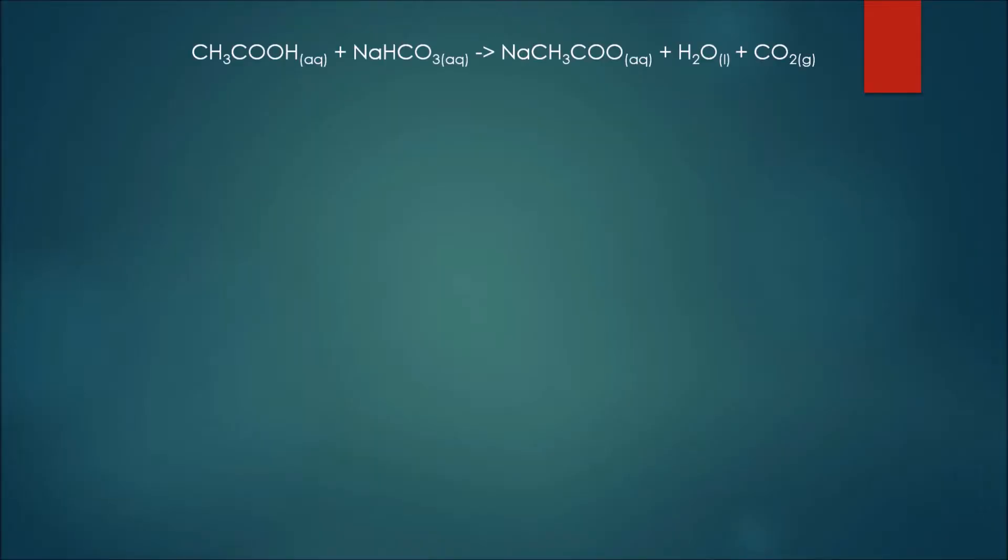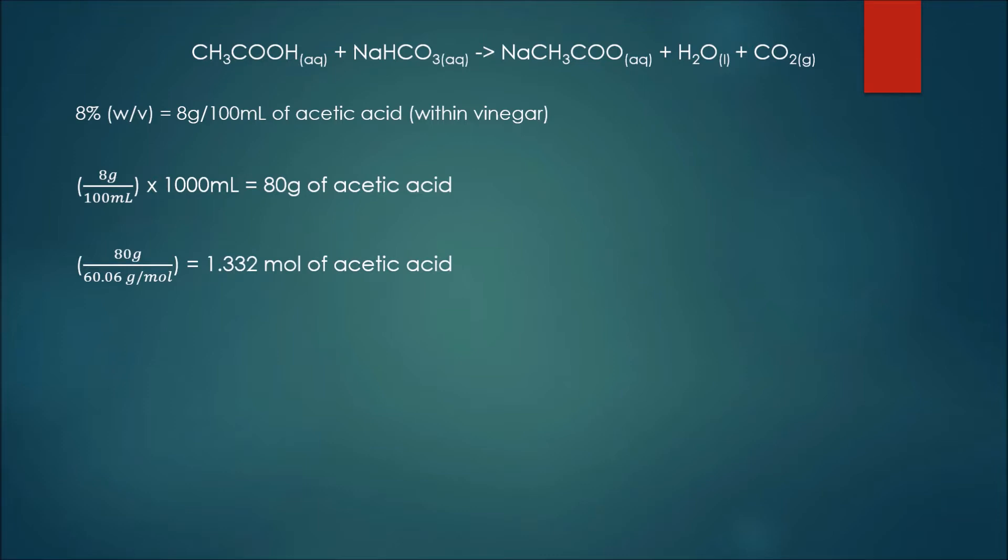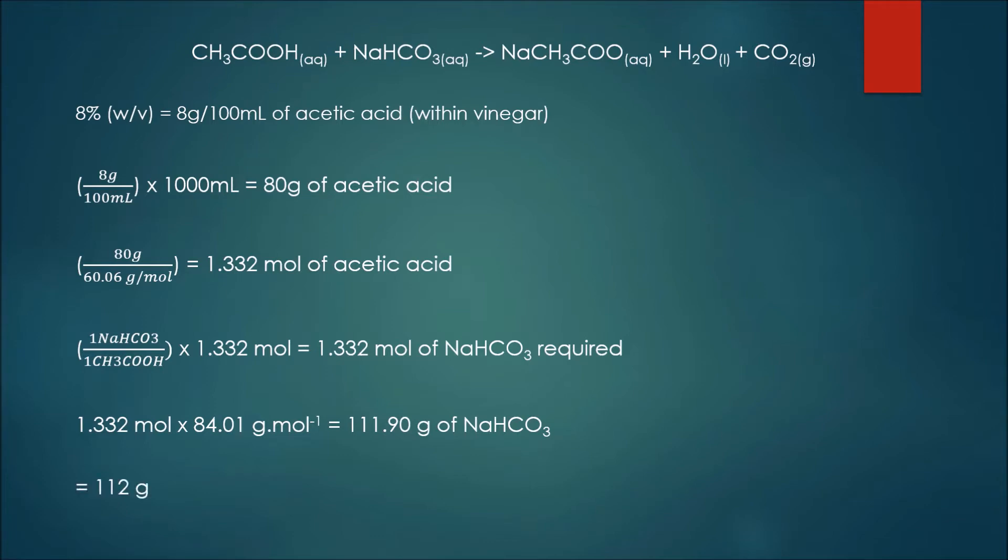So for the equation of our reaction, we have one mole of acetic acid reacting with one mole of sodium bicarbonate to form one mole of our sodium acetate product, one mole of water, and one mole of CO2. So we know it's a one-to-one molar ratio. First things first, we need to calculate the amount of moles of acetic acid present. We have an 8% solution, so that means 8 grams per 100 mL. We have 1000 mL of that solution, so 80 grams of acetic acid. We convert that to moles: 80 grams over 60.06 grams per mole, which gives us 1.332 moles of acetic acid. Using stoichiometry, we get 1.332 moles of sodium bicarbonate required. Converting that back to grams: 1.332 moles times 84.01 grams per mole gives us 111.90 grams of sodium bicarbonate needed, and then we round that off to 112 grams.